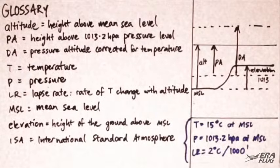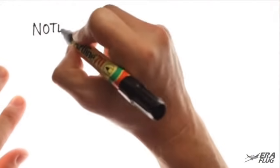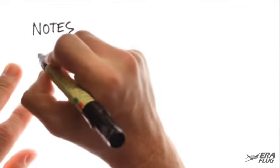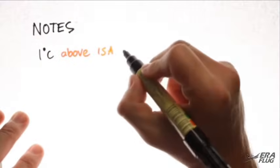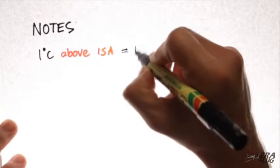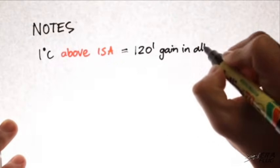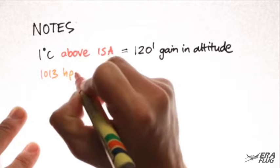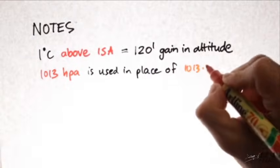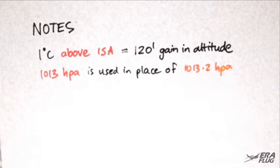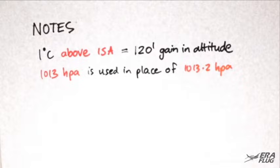For our calculations, please remember the following notes. For simplicity, we will use: 1 degree C above ISA equals 120 feet gained in altitude, and 1013 hectopascals is used in place of 1013.2 hectopascals, which is the actual standard pressure. Note that these values may differ slightly from those of a commercial calculator.